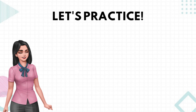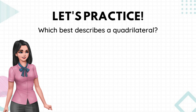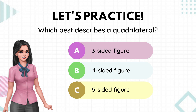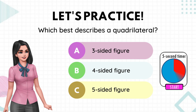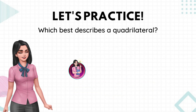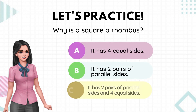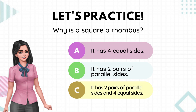Now let's practice. Which best describes a quadrilateral — a three-sided figure, a four-sided figure, or a five-sided figure? Why is a square a rhombus — it has four equal sides, it has two pairs of parallel sides, or it has two pairs of parallel sides and four equal sides?